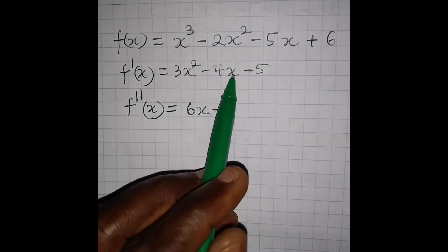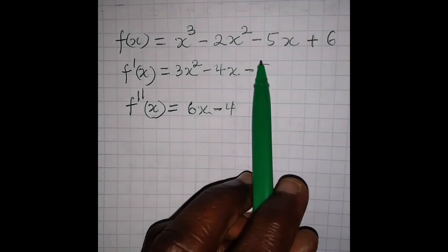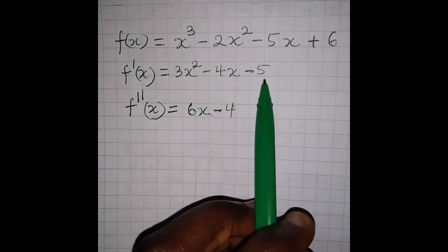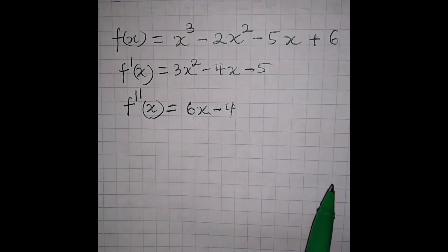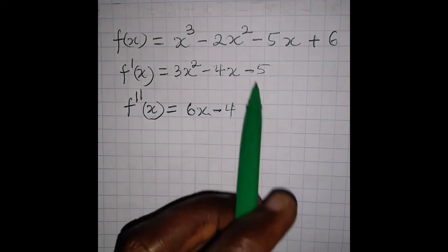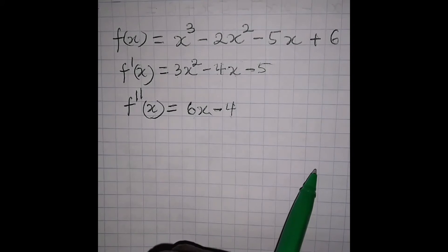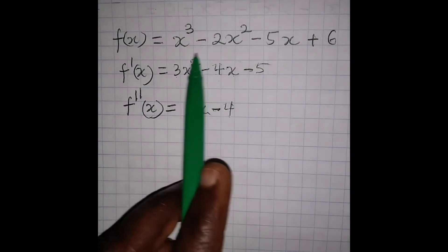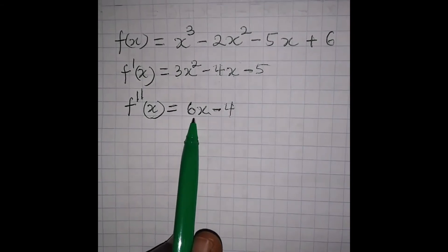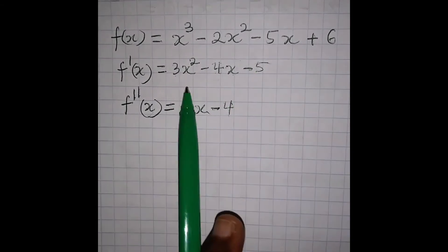1 times minus 4 gives us minus 4. In this case, there is no variable attached to minus 5, so minus 5 becomes a constant, and the derivative of a constant is 0. So the second derivative of this function is 6x minus 4, and the first derivative is 3x squared minus 4x minus 5.